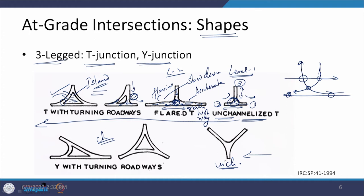In the bottom design, another shape is the Y-junction, again showing unchannelized and channelized cases. This is a more symmetrical type — a pure Y — where traffic can take one direction or go straight, but traffic needing to go right has to take a U-turn. If that is the case, we need to see whether we can make it smoother by providing a gap for the U-turn, segregating the crossing movements that would otherwise occur.